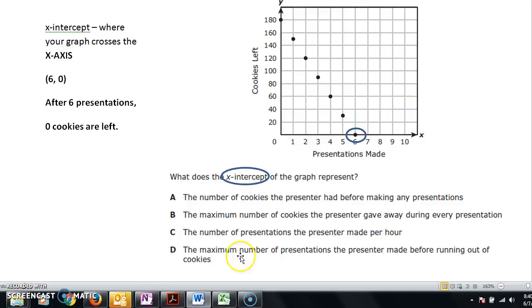The maximum number of presentations the presenter made before running out of cookies. Yeah. So 6, 0 tells us after 6 presentations, we had 0 cookies left. That means she could only present 6 times before she ran out of all of her cookies. D is the correct answer because D tells us that she presented 6 times before she ran out of cookies. Answer choice D.